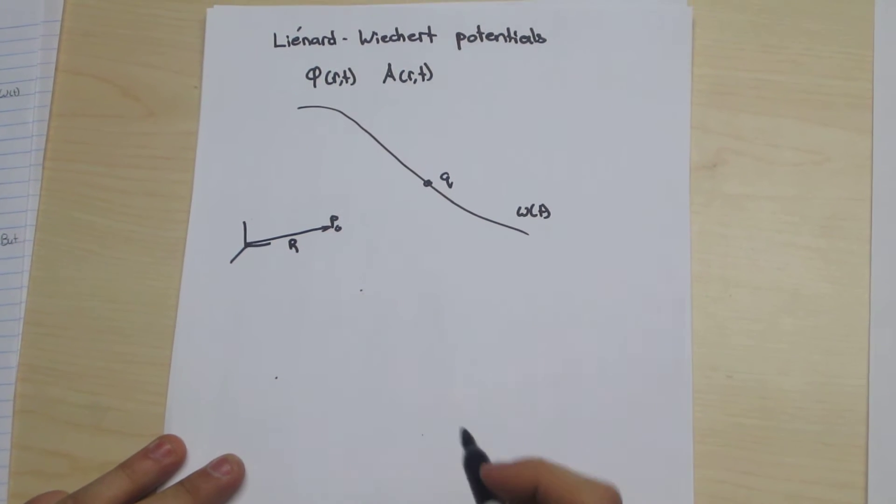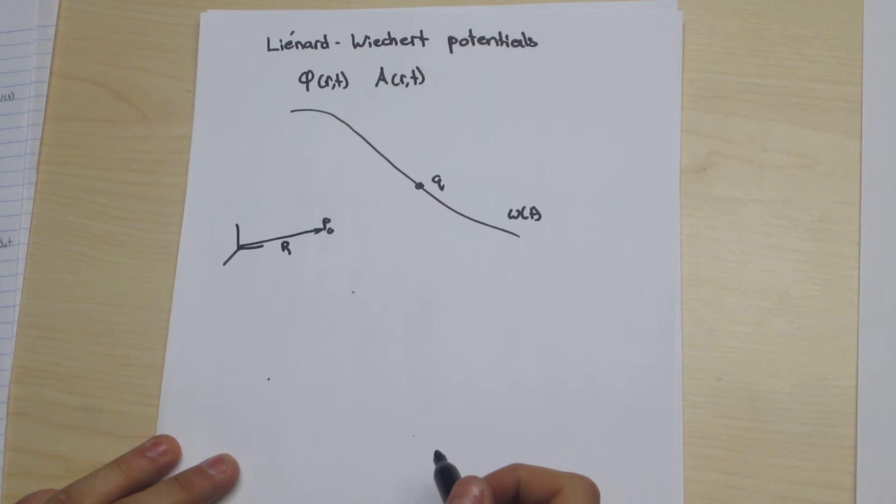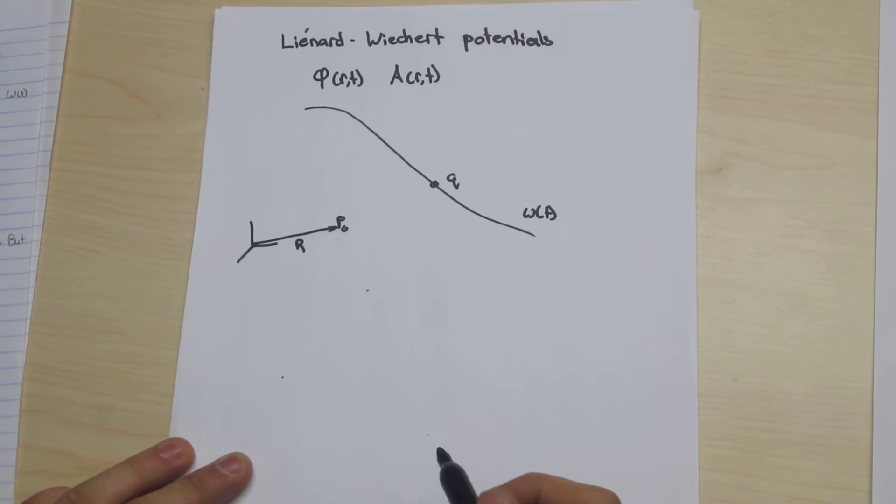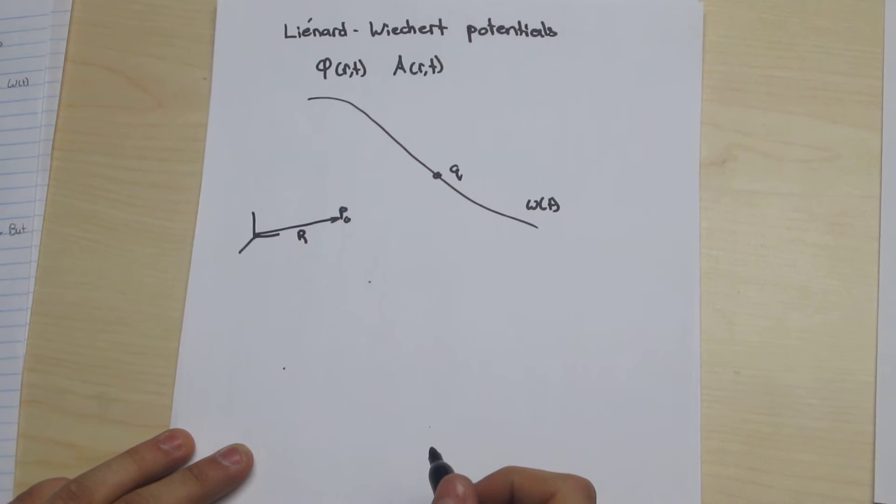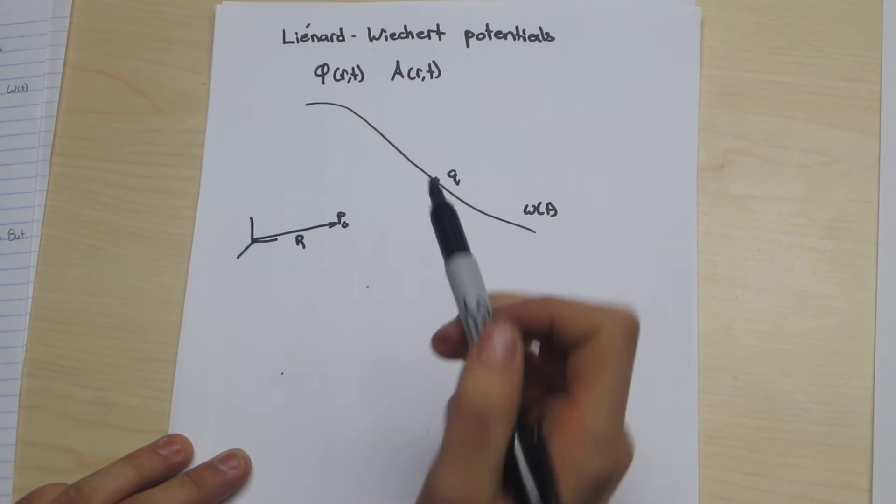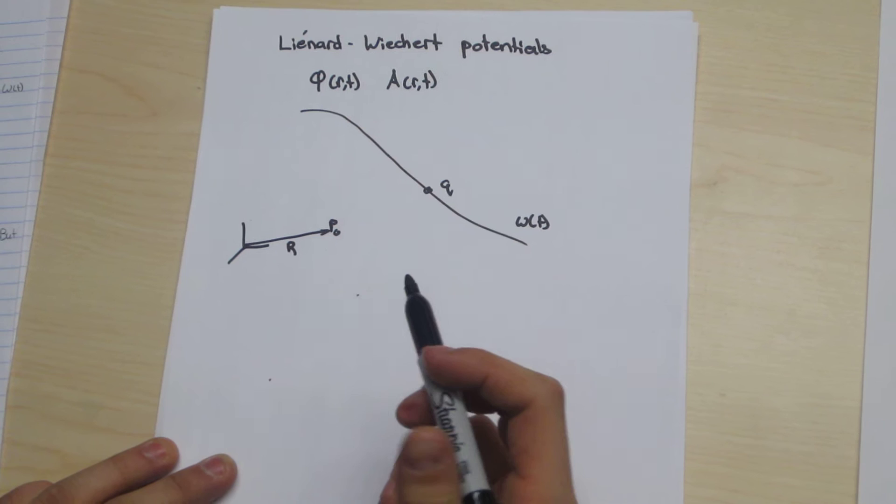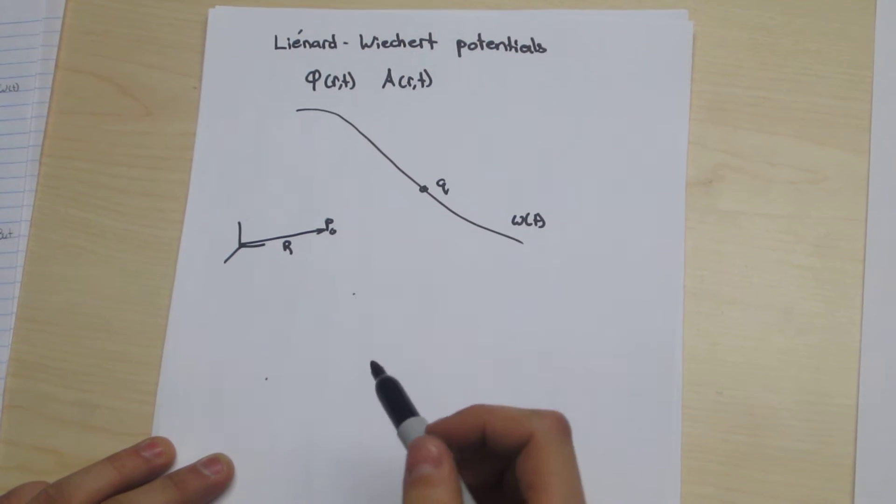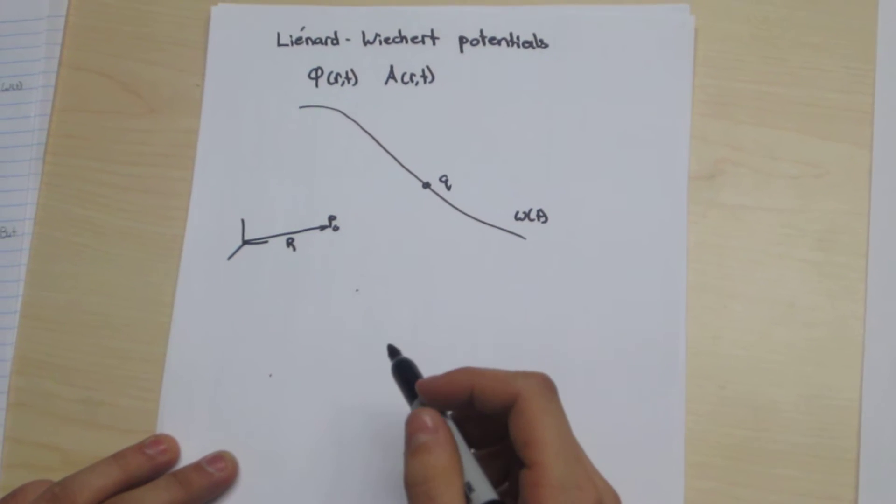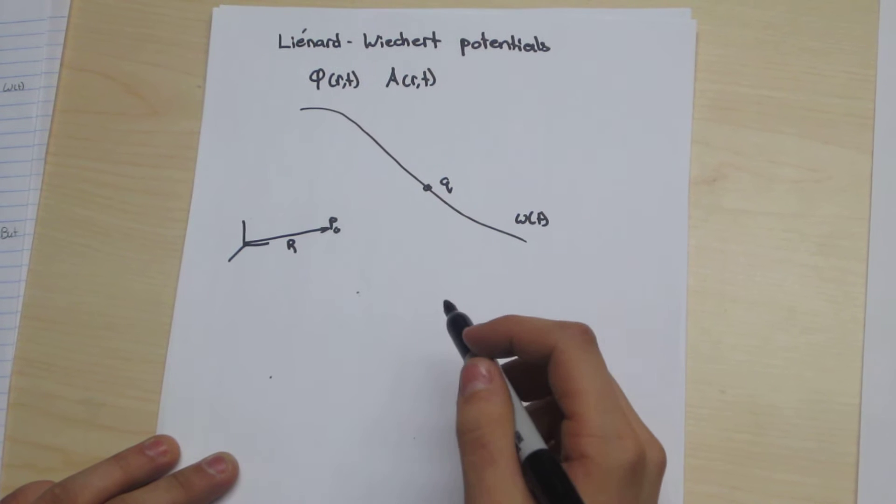It is important to note that the potential at time t at point p-naught is not dependent on the particle's position at time t, because electromagnetic information is not delivered instantaneously, but instead is mediated by photons travelling at the speed of light.